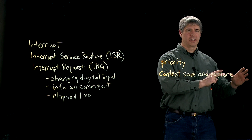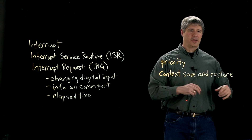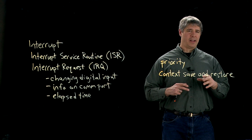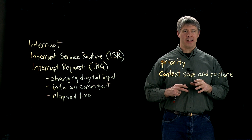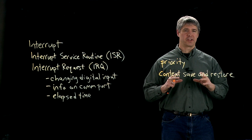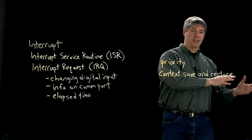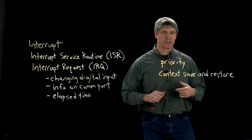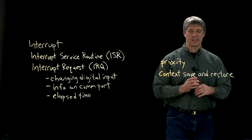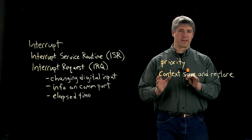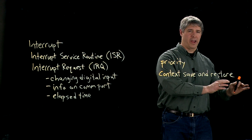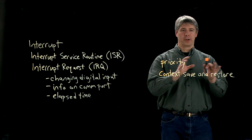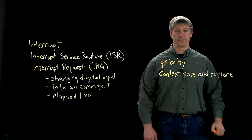When you want to interrupt, you need to save all that information into RAM so that you can use the registers for the interrupt service routine. After the ISR ends, you take the data stored in RAM, put it back into the CPU registers, and pick up where you left off. That's the context save — saving from the CPU registers into RAM — and then restore, taking those values from RAM and putting them back into the CPU.